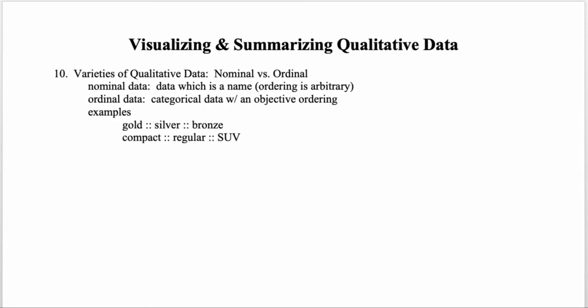Now we move on to the other type of qualitative data: ordinal data. Nominal data is essentially nothing but a name, and its ordering is arbitrary — that's why we could reorder bars by frequency for the Pareto chart. Ordinal data, however, is categorical data that does have an objective ordering, so it wouldn't make sense to arbitrarily change the order.